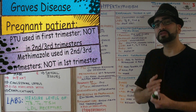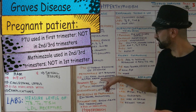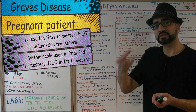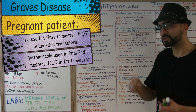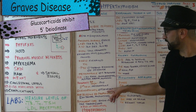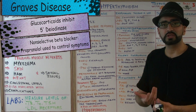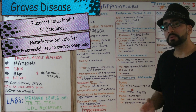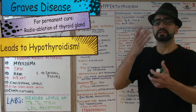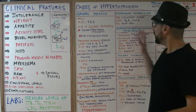In pregnancy, in the first trimester you must use PTU — not methimazole, because methimazole is highly teratogenic and can cause severe aplastic anemia. In the second and third trimesters, switch to methimazole because PTU has a hepatotoxic effect. Glucocorticoids inhibit 5'-deiodinase, blocking T4-to-T3 conversion. Non-selective beta blockers such as propranolol help with tremors and palpitations. For a permanent cure, radioablation of the thyroid gland can be done, but it will most likely lead to hypothyroidism — counsel your patients accordingly.